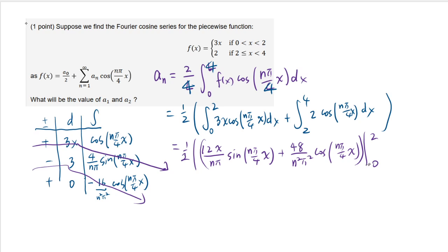For the second integral, when you integrate cosine you get sine and the reciprocal factor comes in front, giving 2 times 4 over n pi · sine(n pi over 4 · x), and this must be evaluated from 2 to 4.